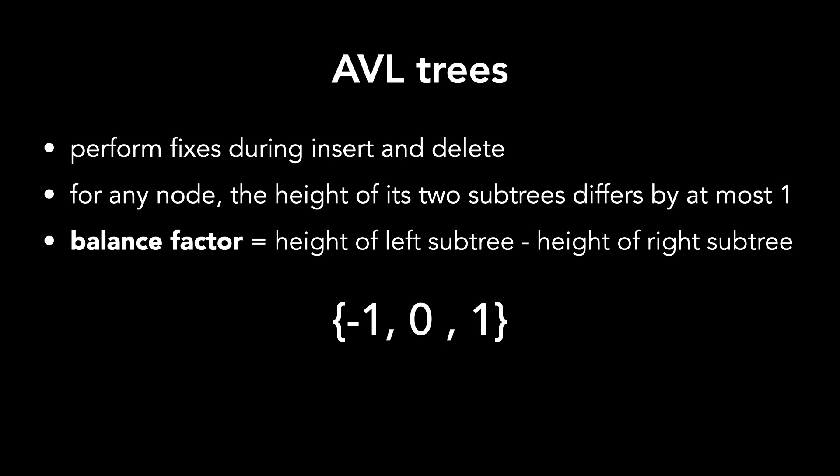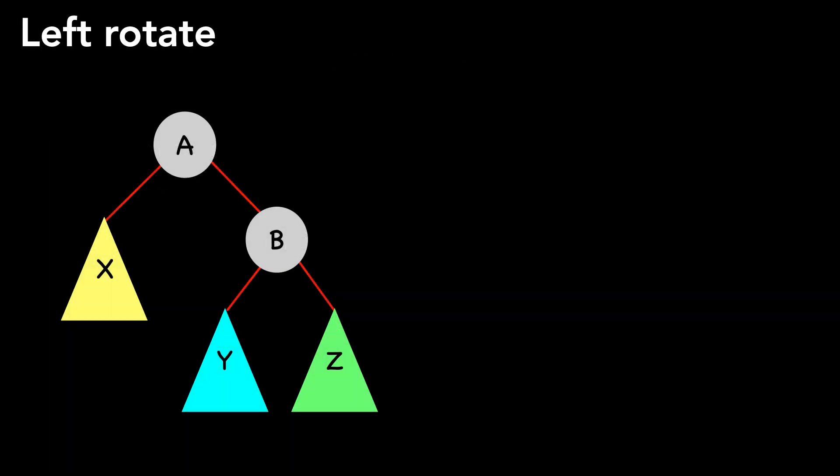Let's talk first about the types of fixes we'll do, and then I'll show you how to use them. First, there is left rotate. In this situation, we rotate A down and it becomes the left child of B.